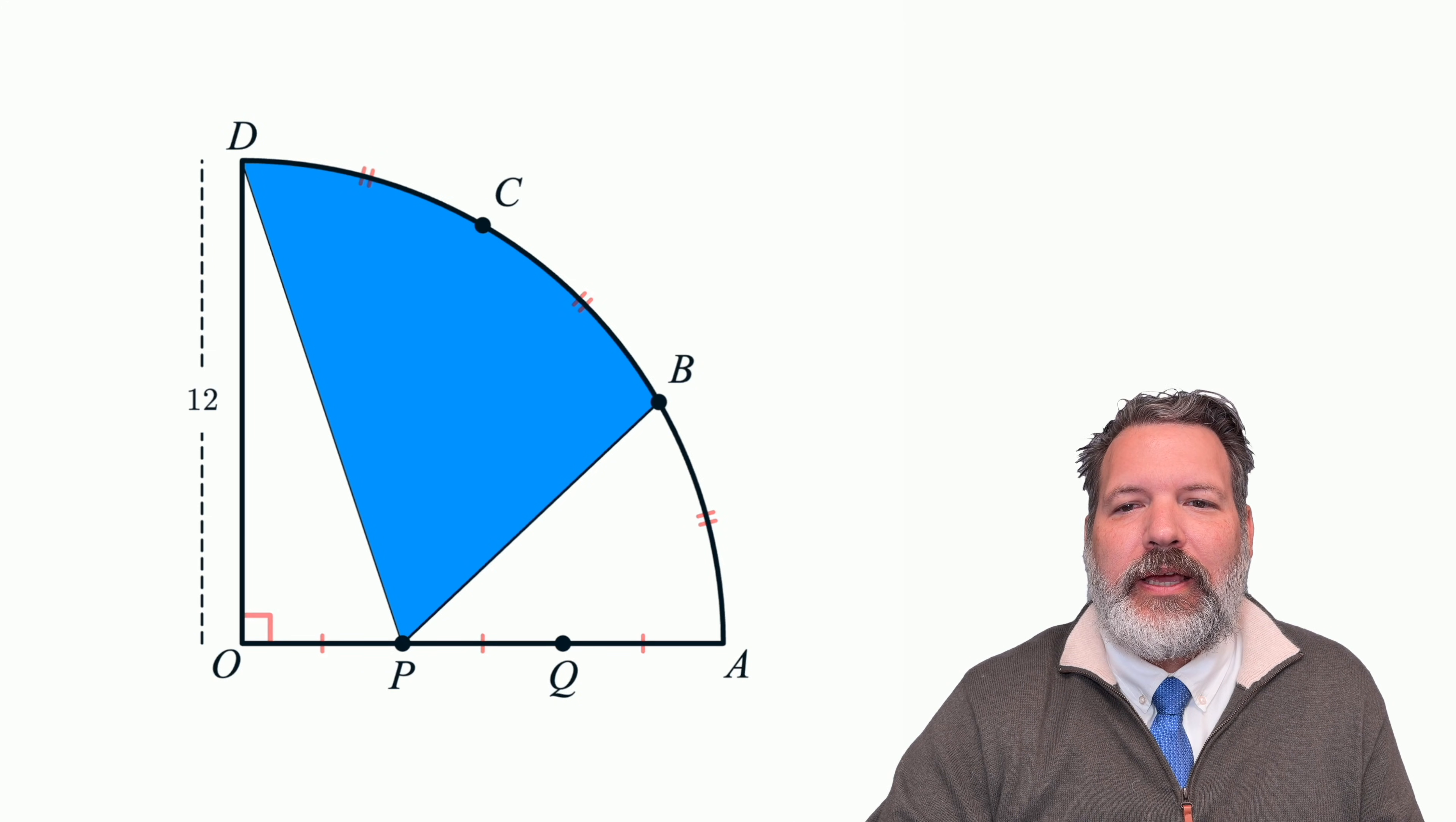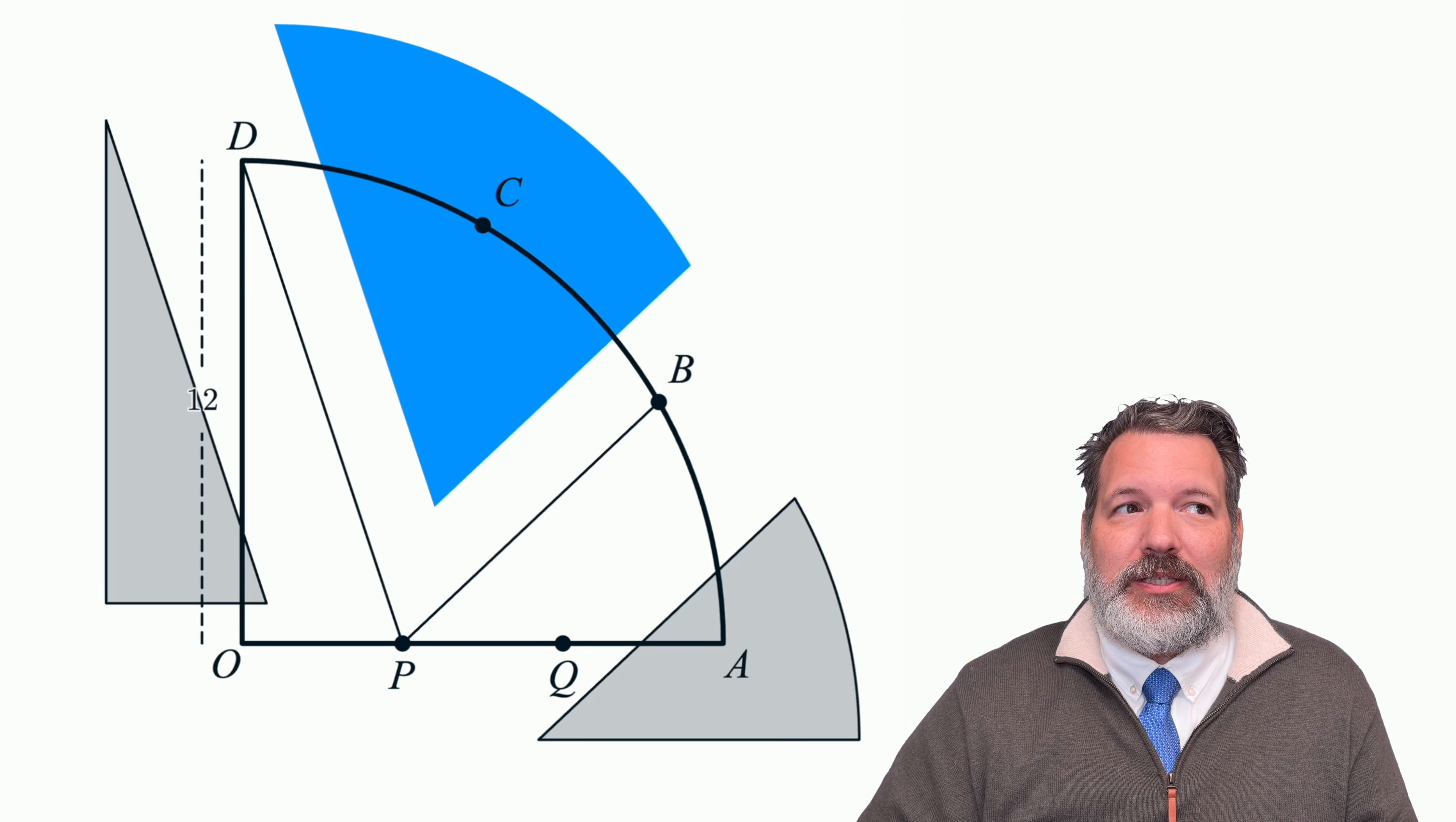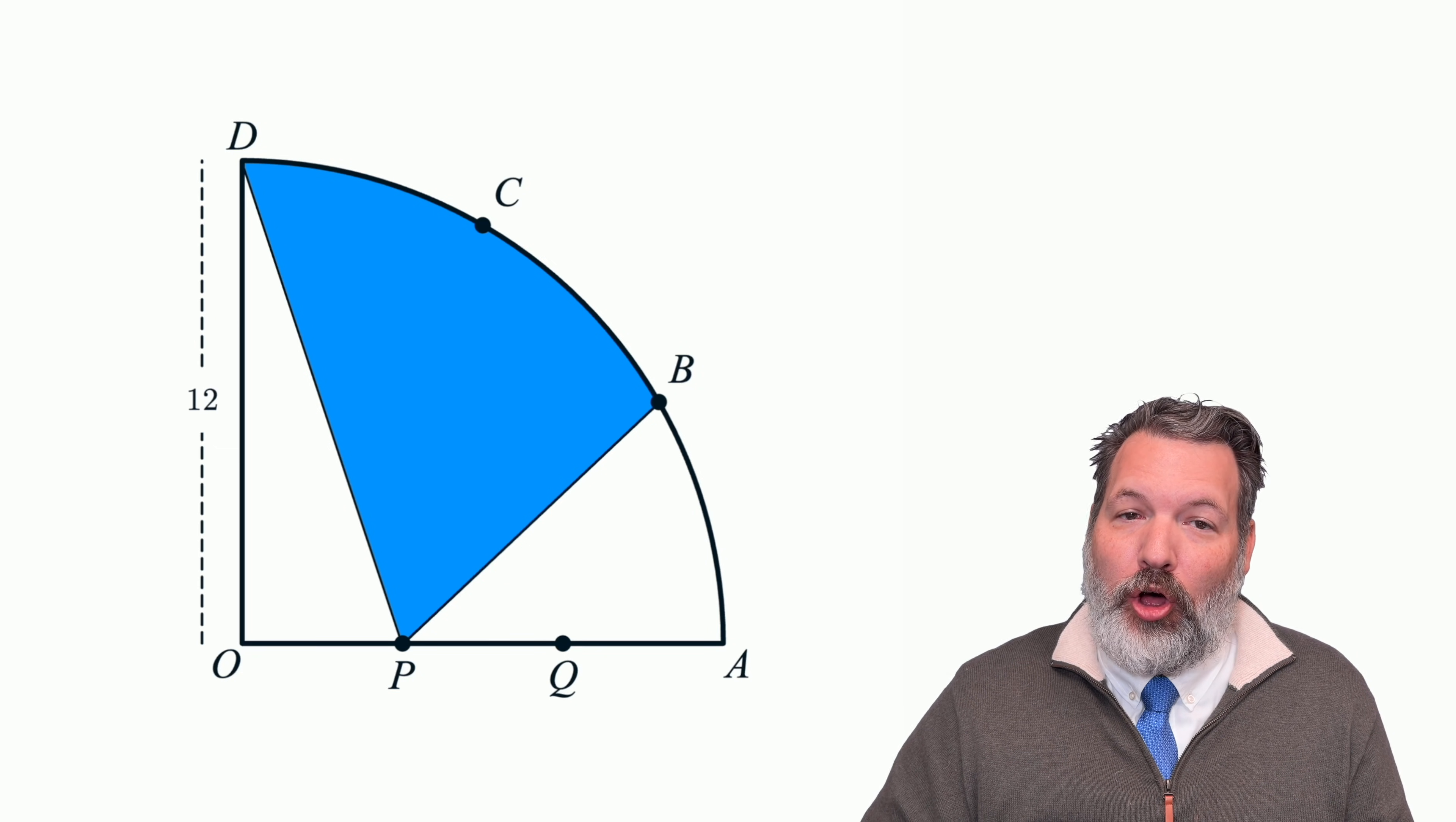Now, like I said, composite area is often about what you add together, but sometimes it's about what you subtract. Another common approach here would be to say, let's actually separate out that triangle region O, P, D on the left, and then that kind of triangular wedge-ish region P, B, A on the right. And if we can find those two areas, all we would have to do is subtract that from the total area of the quarter circle. And then whatever's left over is our blue shaded region. And while that's definitely true, it is unfortunately not a great way to approach this particular problem. Because that wedge-shaped region P, B, A on the right, that is not an easy region to find the area of all by itself.